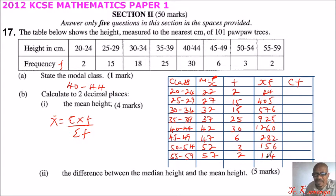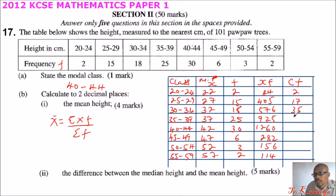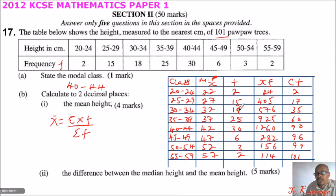For the cumulative frequency, add up the frequencies progressively: 2, 2+15=17, 17+18=35, 35+25=60, 60+30=90, 90+6=96, 96+3=99, 99+2=101. The total cumulative frequency is 101, which matches the total frequency.